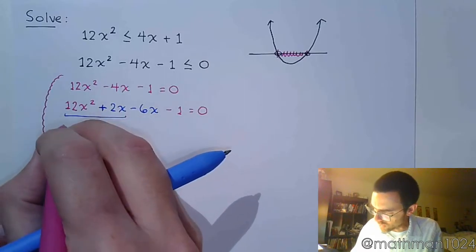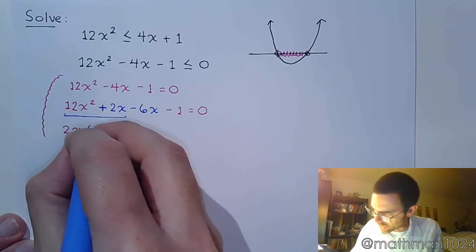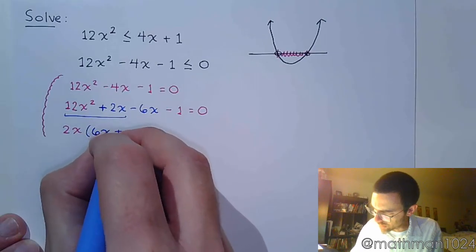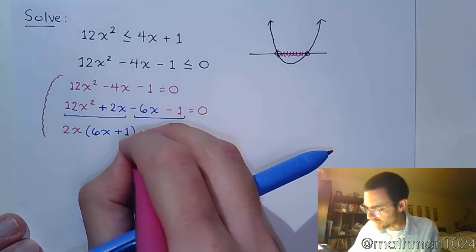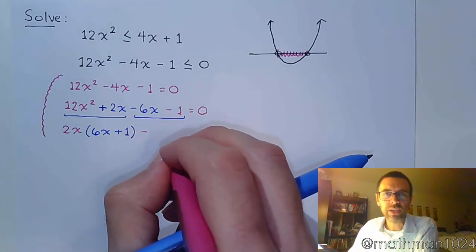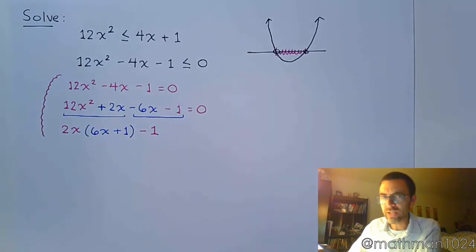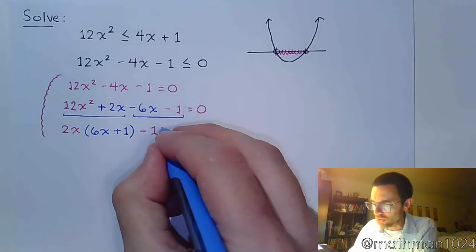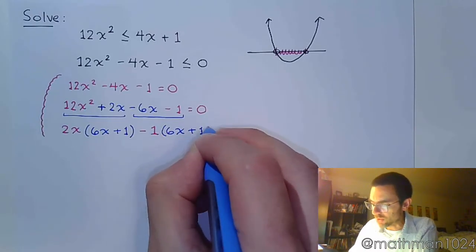So in the first group, the common factor here is 2x. If I factor that out, I have 6x + 1. The second group begins with a negative so I need to factor that out. And the only thing that 6x and 1 have in common would be a factor of 1. Although not necessary to write, we do have to include that in the final step.